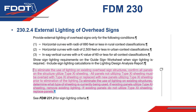In section 230.2.4, the language covering guidance on the elimination of existing overhead sign structures was modified. This modification, shown here, allows for the elimination of lighting if existing panels are overlaid with Type 11 sheeting.